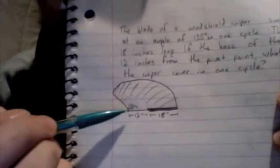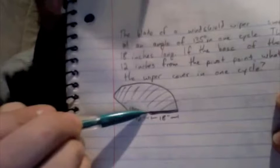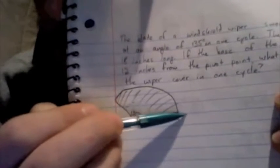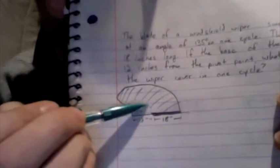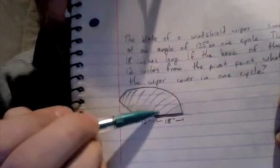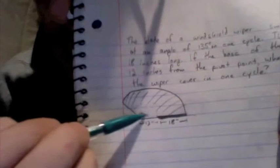So I started off by drawing a little picture here. And here's our pivot point. And there's the base of the wiper, 18 inches long. And the shaded area is what we're trying to find the area of. So we're going to have to find the area of the whole thing, and then subtract out this area.